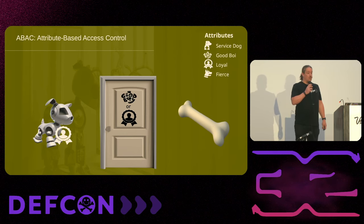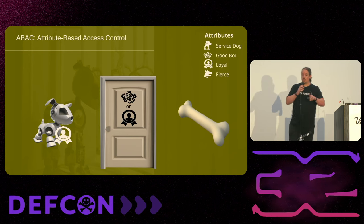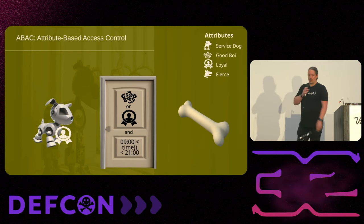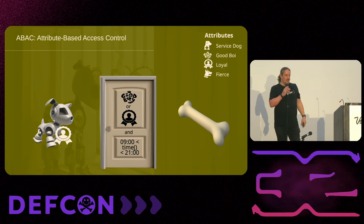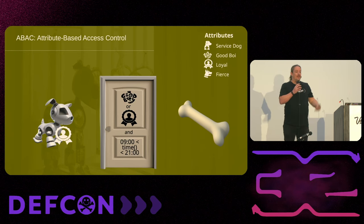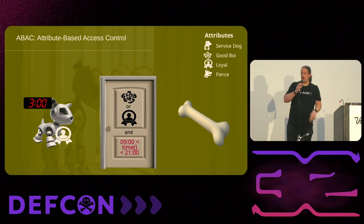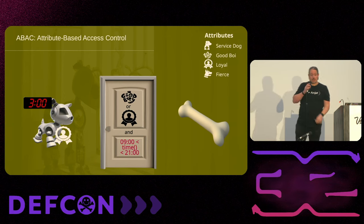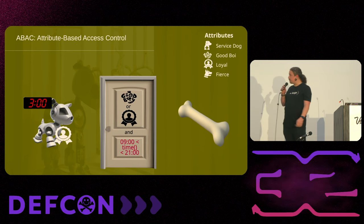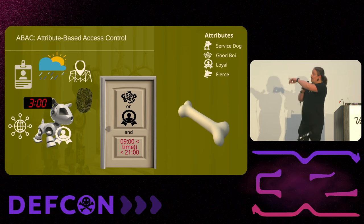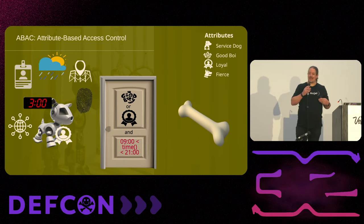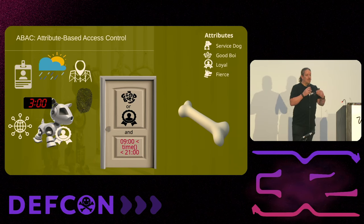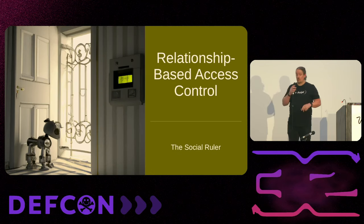We're going to layer another attribute on top — time. Who would like the sound of a crunching bone at 3 a.m.? Certainly not me. So if it's outside of 9 p.m. to 9 a.m., no bone for you. Sadly, Min gets no bone. But there are plenty of other things we can use as attributes: actual identity, physical location, network location, time, weather, whether or not you're authenticated to a system. Lots of things can be layered on top as attributes for whether or not somebody should get access to a resource. This brings us on to relationship-based access control.